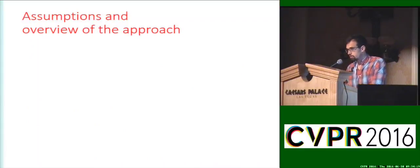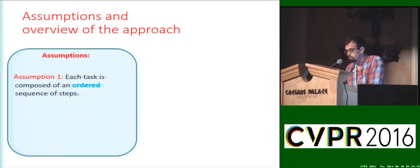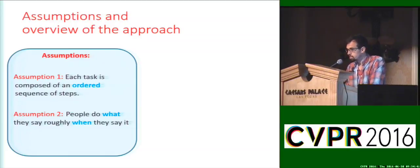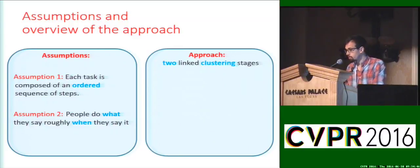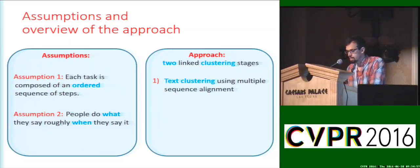We first start with two simple and natural assumptions to simplify the problem. The first assumption is that each task is composed of an ordered sequence of steps. This assumption, which might seem quite strong, is however crucial in lots of scenarios — for example, one cannot imagine removing the wheel before jacking up the car. The second assumption is that people do what they say roughly when they say it. For the model, we start from the observation that there are less variations in the text signal than in the video signal, and we design our approach as two clustering problems linked by constraints — the first one in text and the second one in video.